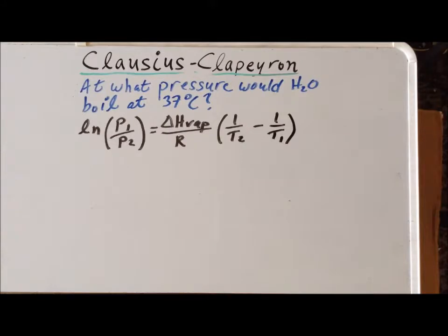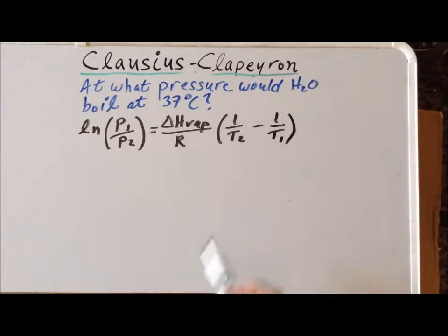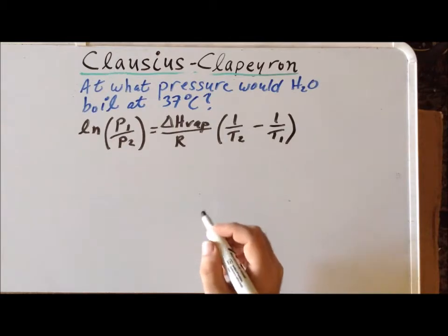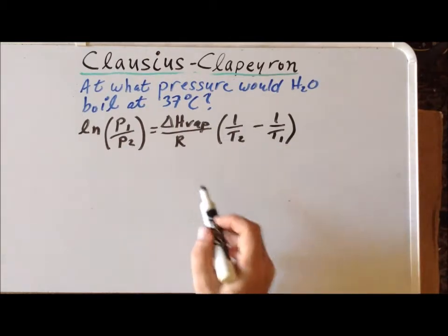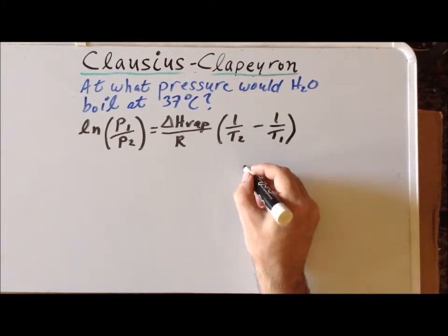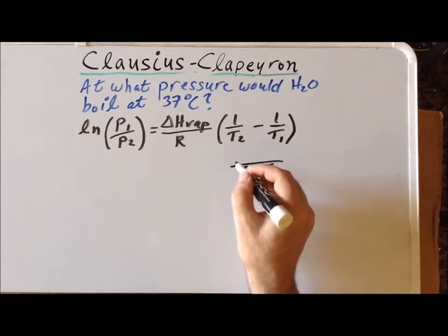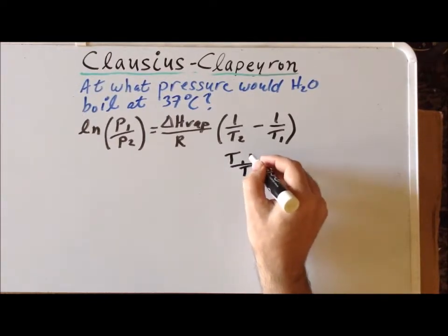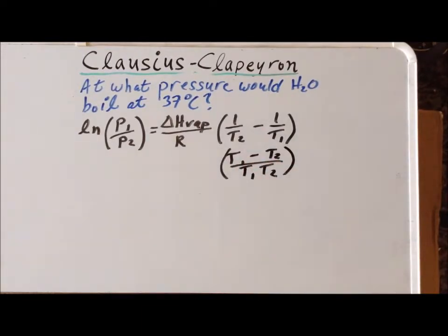For this particular problem, we can write a more convenient expression for the terms that are written inside the parentheses. The best way to do this is to find a common denominator, which ends up being T1 times T2. The resulting expression looks like this: T1 minus T2 divided by T1 times T2.